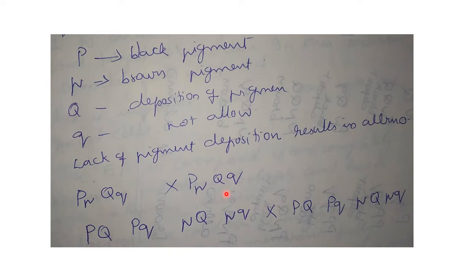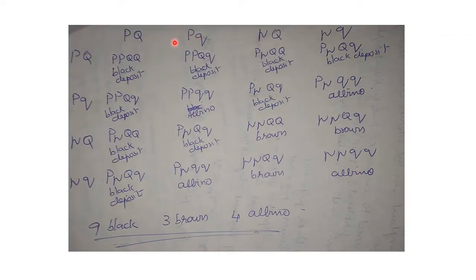When two canines with genotype PpQq are mated, from the Punnett square you can see that there are nine black, three brown, and four albino offspring. The phenotypic ratio is 9 black : 3 brown : 4 albino. The answer is option 2.